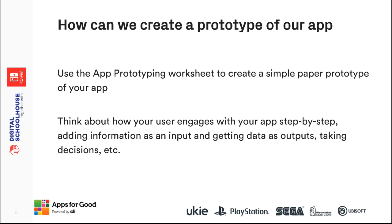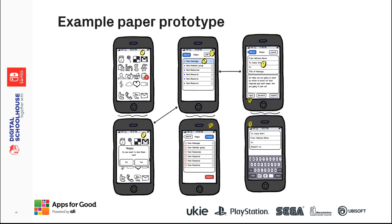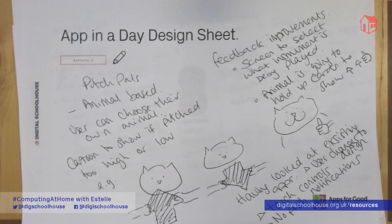This is an example of a paper prototype — this is what we're going to be doing to start with on our worksheets. I'm going to hop over onto the worksheets now and start to think about how we're going to develop our paper prototype. It's a good idea to go back and look at your design sheet from last time, because it will really help you identify what things need to go into your design.